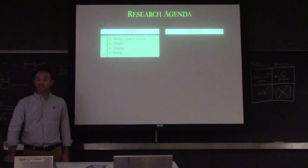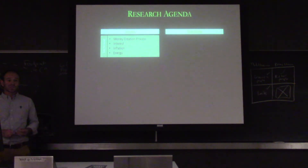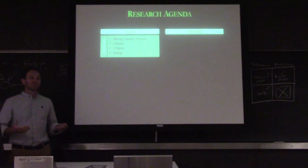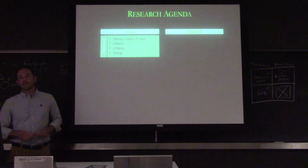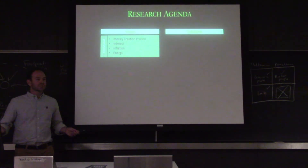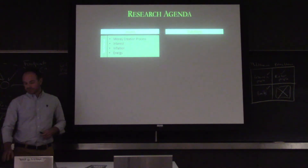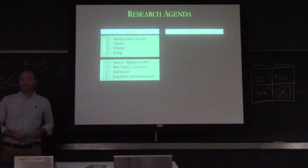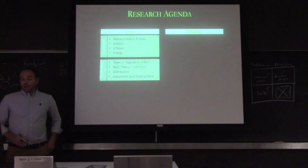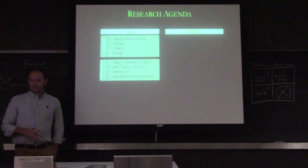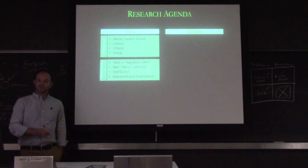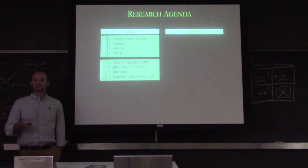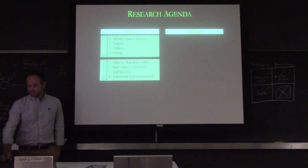We're also really interested in inflation. When the neoclassical school talks about printing too much money causing inflation, we don't really see that that's true when we look at the empirical facts — but it's still a question we need to answer: what is the role of money and inflation, and obviously energy. These theoretical pieces around issues include taxes versus regulations, rent theory and the commons — what is the role of individuals creating wealth versus the role of society, and to whom should that wealth be distributed? And this difference between investment and development.